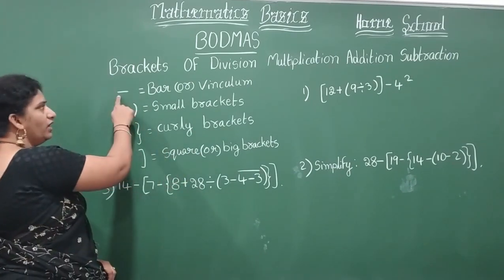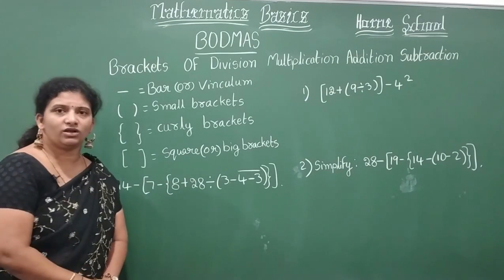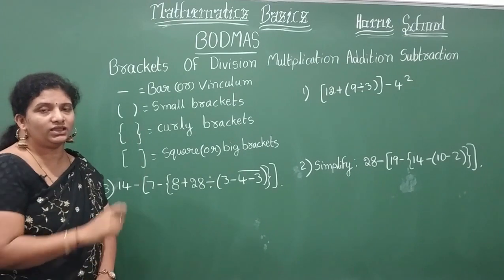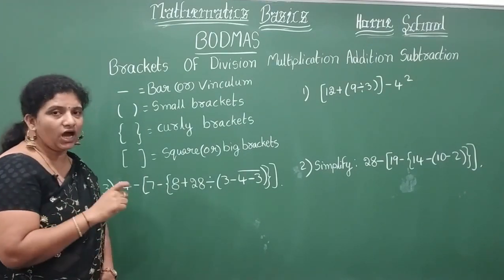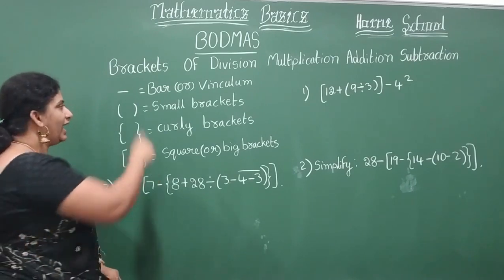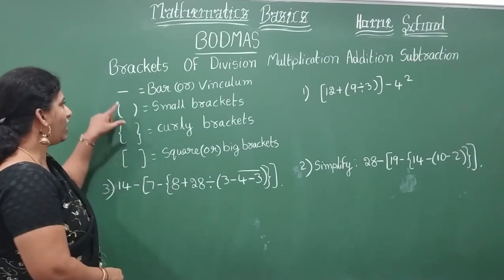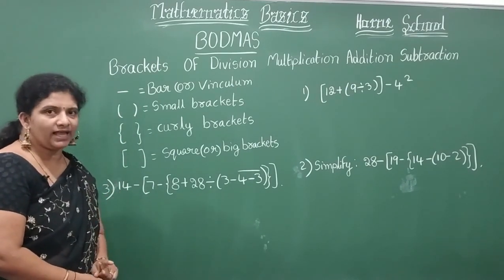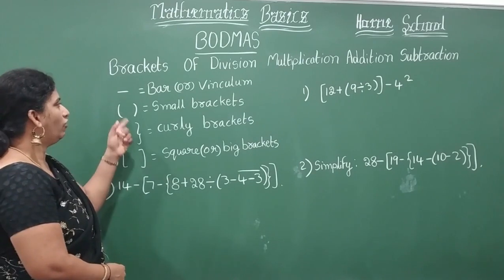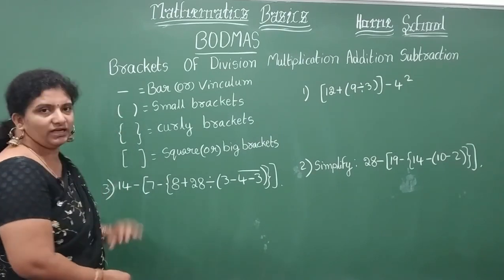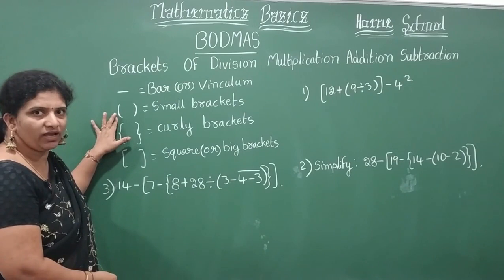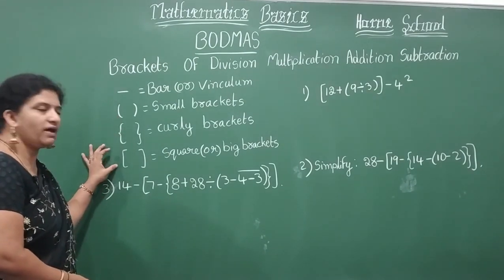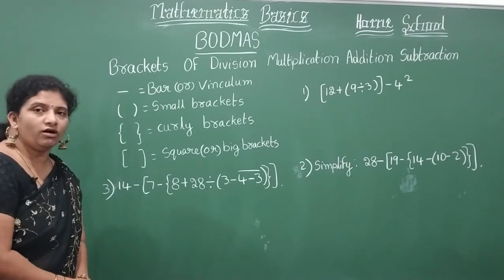So here we are going to come across some brackets here children. Let us know about what are all those. Suppose, look here, a bar or vinculum you are going to call this. First you have to select for the bar, if you have bar on a number. Then go for the small brackets, small or round brackets we call this. Next one is curly brackets and next bracket is square or big bracket.